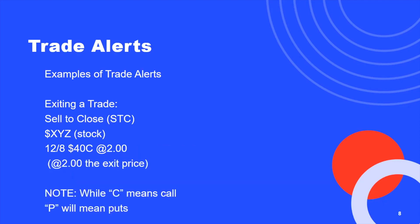Here's an example of exiting the trade — sell to close, STC. Again, the stock that we're in, the option that we're in, and the exit price. Note: C means call and P will mean put.